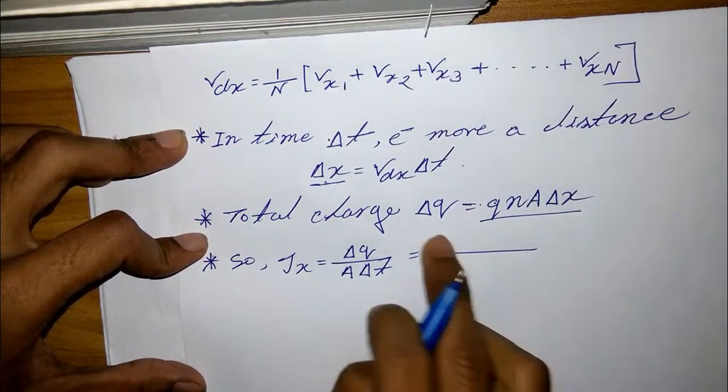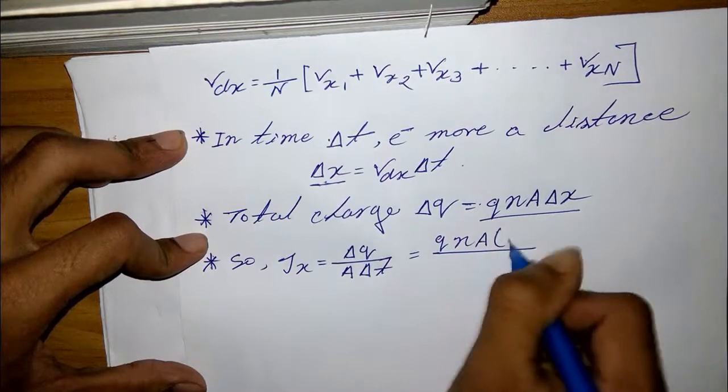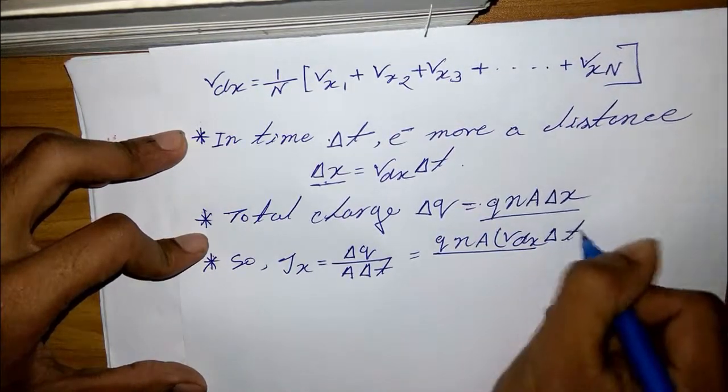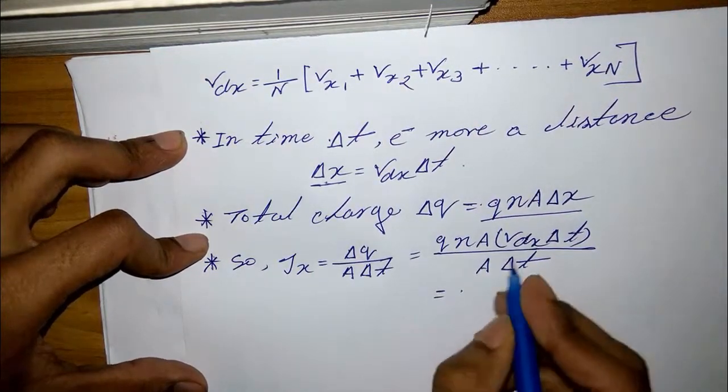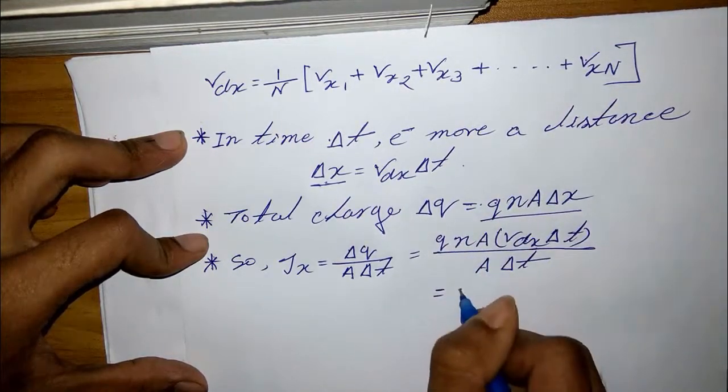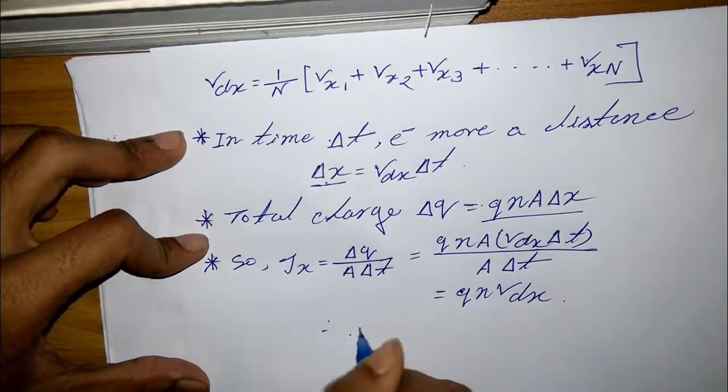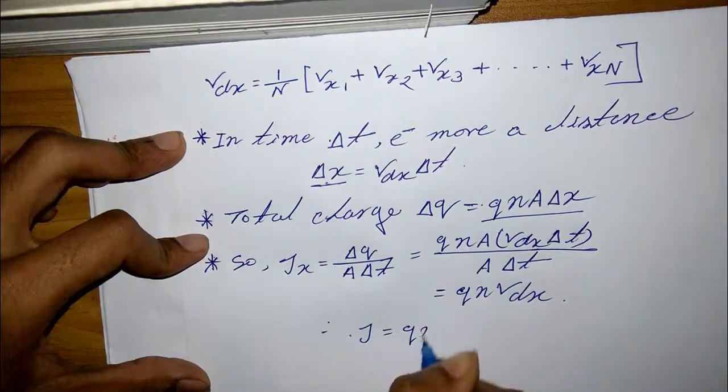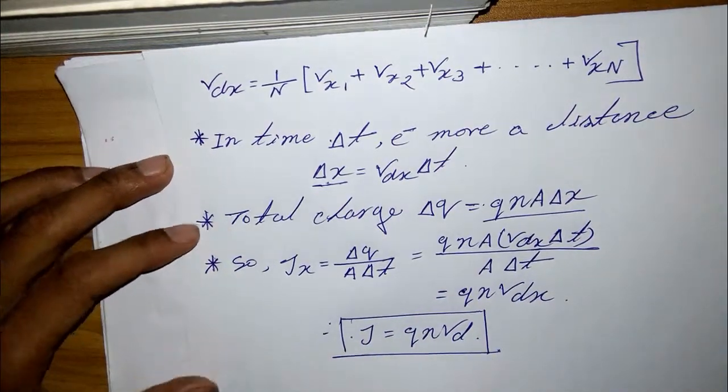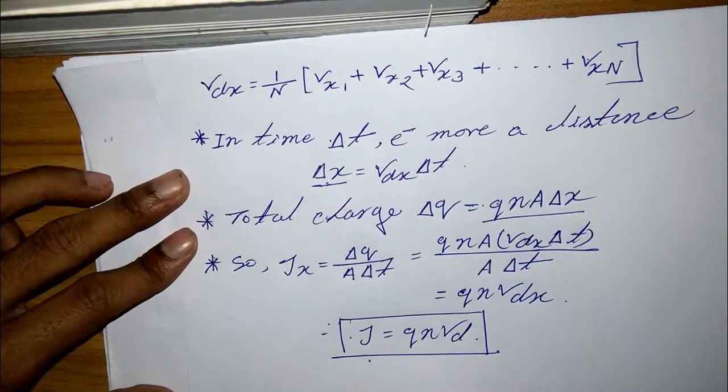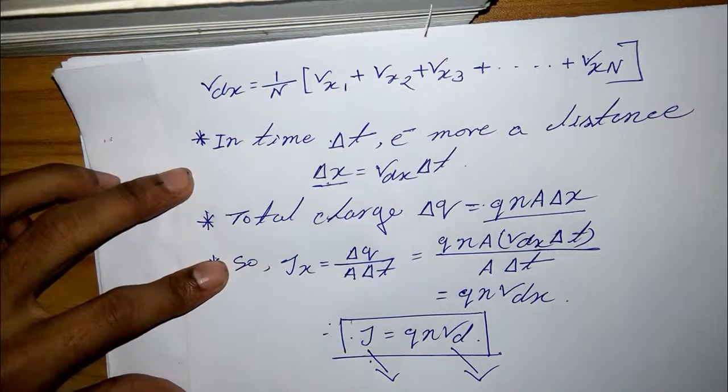Here is del q. The value of del q is replaced here, that's why I write it a del q by a del t. After taking part of the derivation, the result is q n v_dx. So j equal q n v_d. That's the relation between current density and drift velocity.